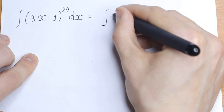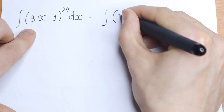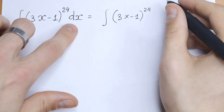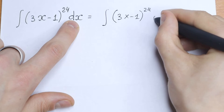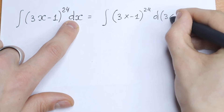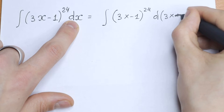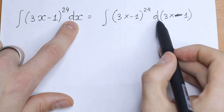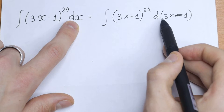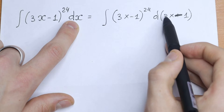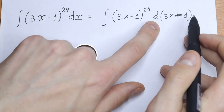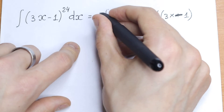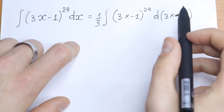We will have the integral of the same (3x-1) to the 24th power. But I want to put the differential of (3x-1). As a result, if we have taken the derivative, the derivative from here will be 3. And we need that nothing changes, so we need to multiply by one-third.